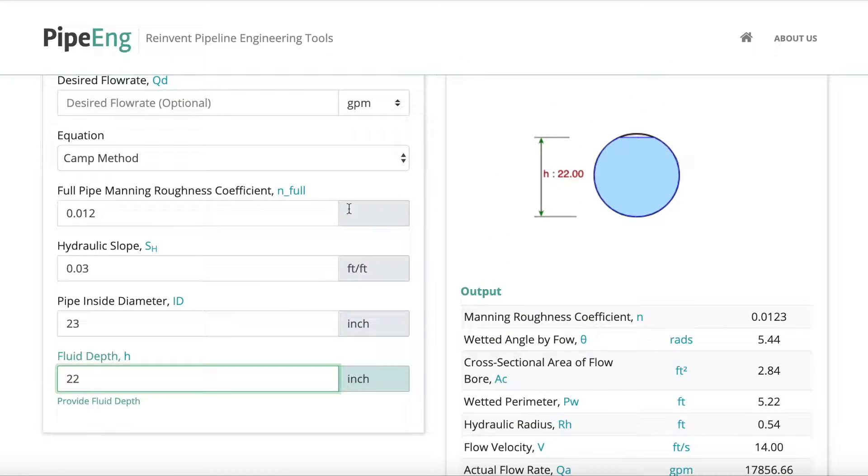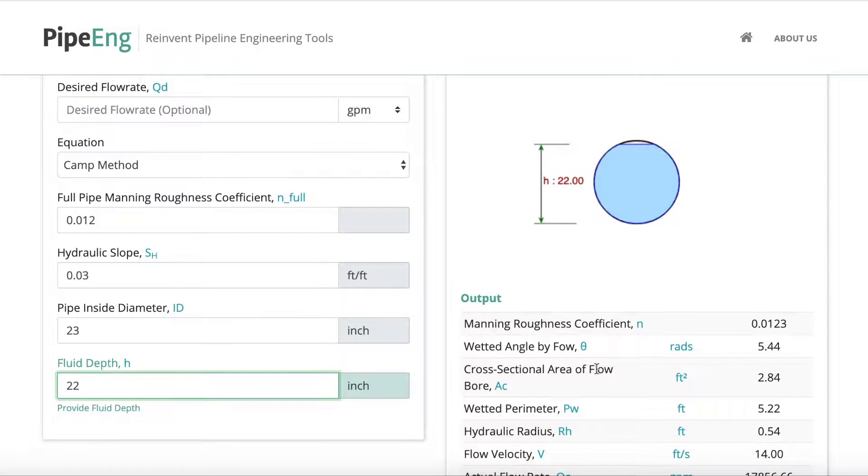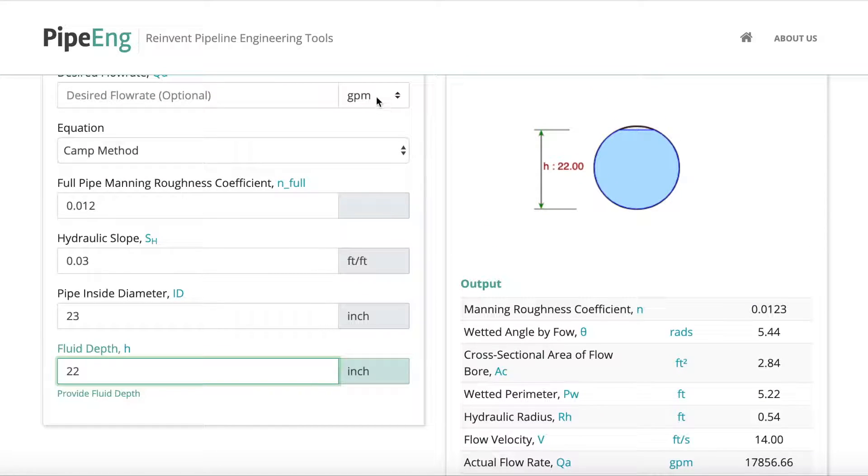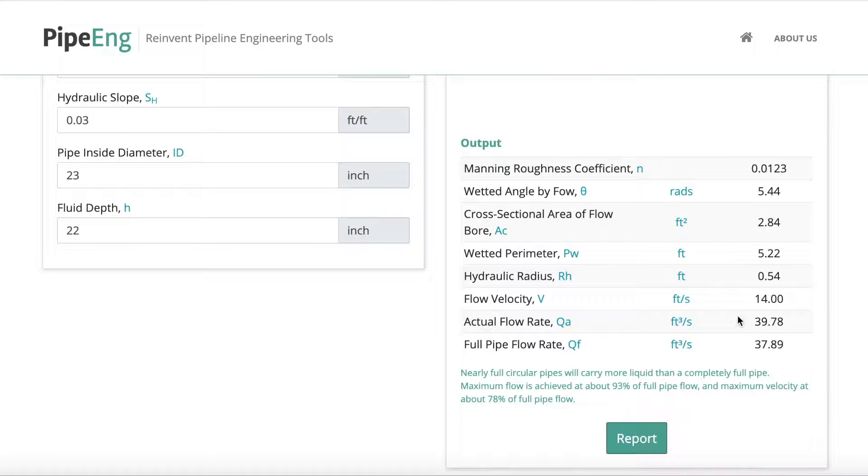But anyhow, so this is how you can use the slope available and the size to get an idea of what's going to be the flow rate to make sure this can handle your design conditions. And we just want to point out that right now it's showing as gallons per minute. If you want to change the units to cubic feet per second, which is also pretty common for open channel pipeline, you can just change it here. So that will help you to change the units.